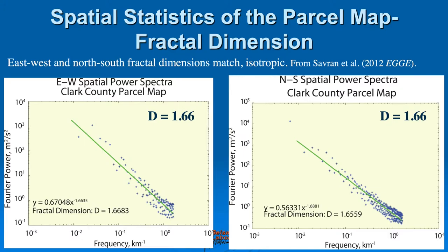We can calculate a fractal dimension from east-west and north-south spatial power spectra across the map. The parcel map velocity values yield a fractal dimension of 1.66, and that holds no matter which direction we slice it.